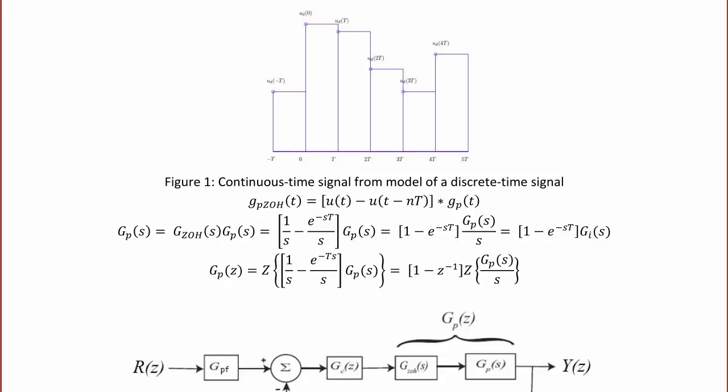The formula we use is GP_ZOH(t) = U(t) − U(t − NT), because this is how we make that pulse train — it's the difference between two step functions times the continuous time plant GP(t). When we take the Laplace transform, we get GP(s) = G_ZOH(s) · GP(s), or (1/s − e^(−sT)/s) · GP(s). That's because 1/s − e^(−sT)/s is the Laplace transform of U(t) minus a delayed step function. This can be rewritten as (1 − e^(−sT)) · GP(s)/s, also written as (1 − e^(−sT)) · GI(s).